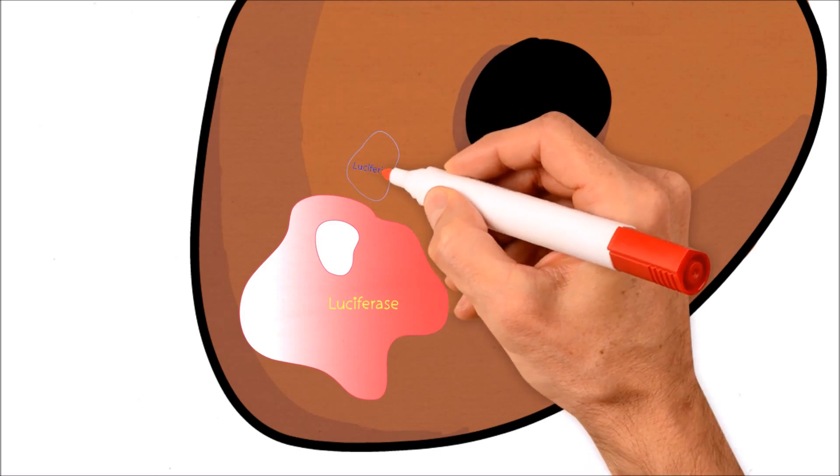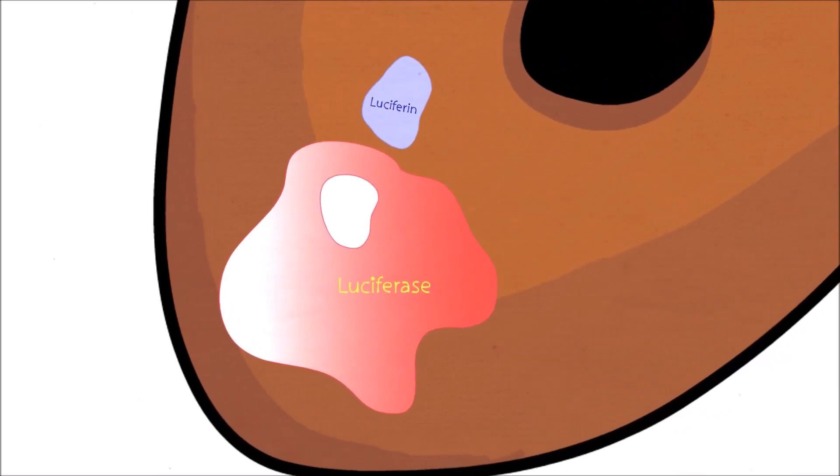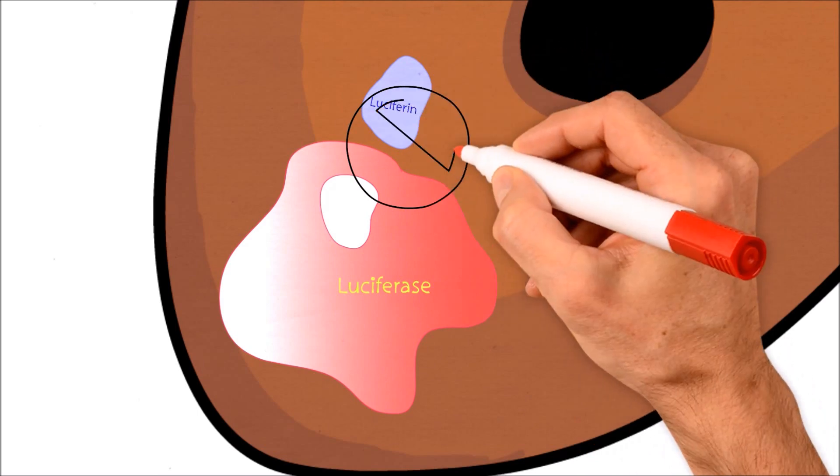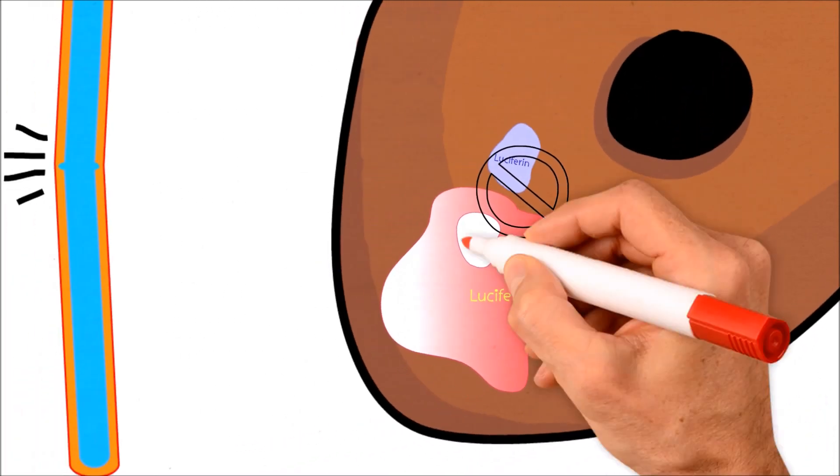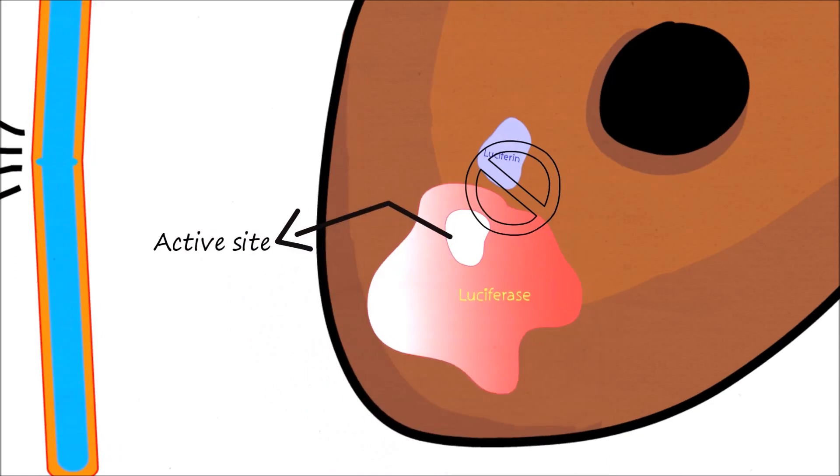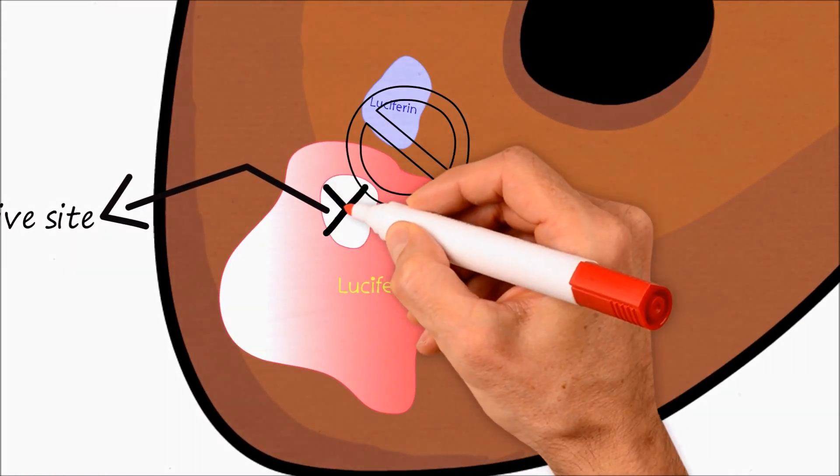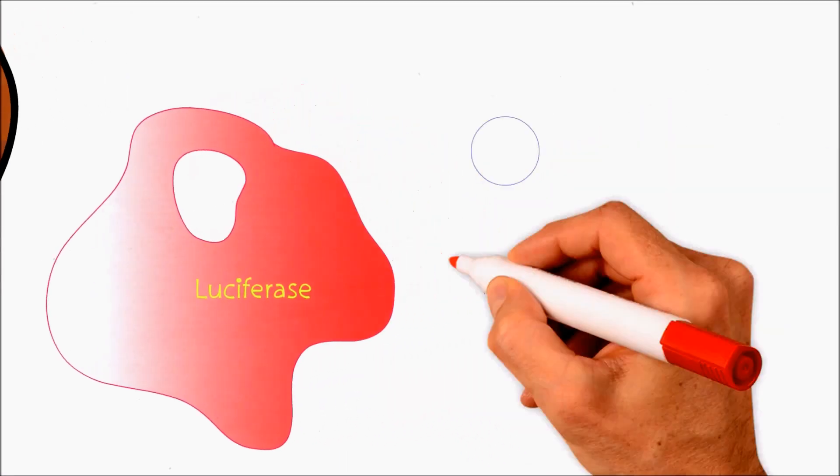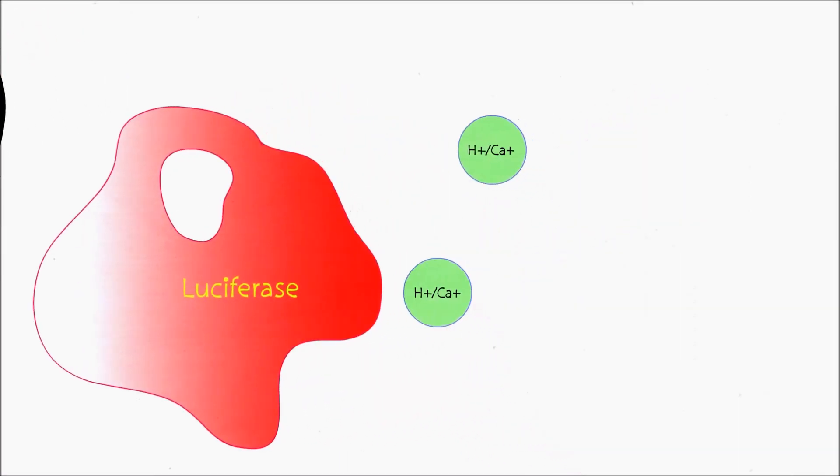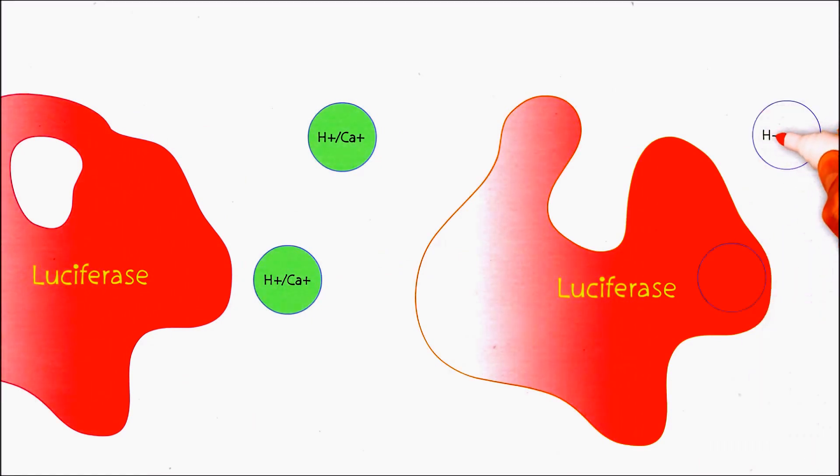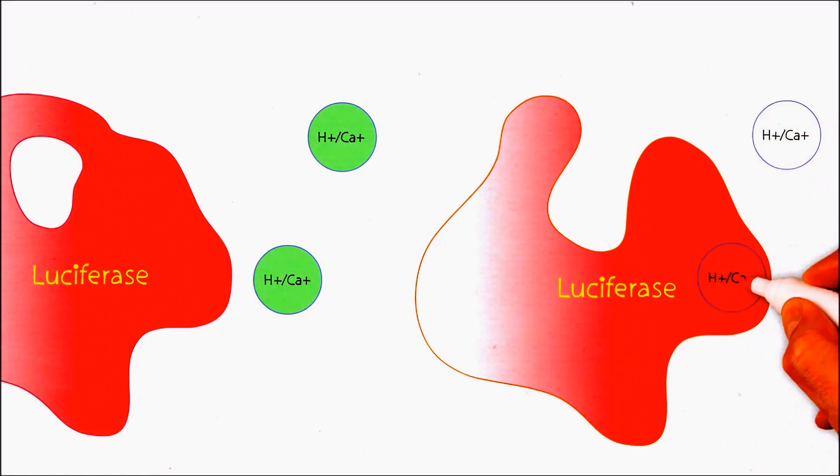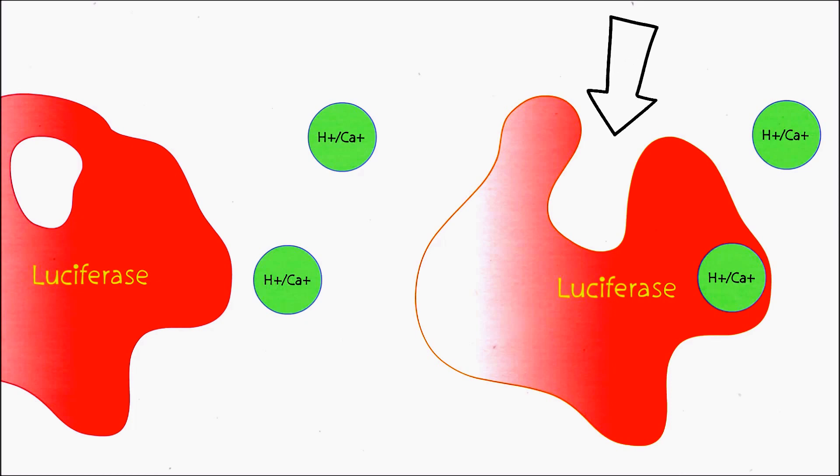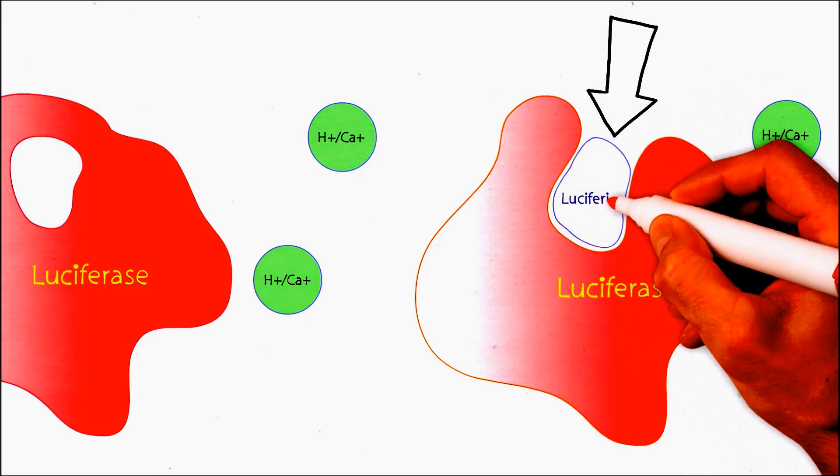Although they are present in the same compartment of the cell, the luciferin and luciferase cannot interact with each other because under normal conditions the active site of luciferase is not accessible to luciferin. But when conditions change and there are certain ions like magnesium, calcium, and hydrogen present in the cellular matrix, these ions can bind to the protein luciferase, thereby making structural changes to the protein, bringing out the active site and making it accessible to the substrate luciferin.